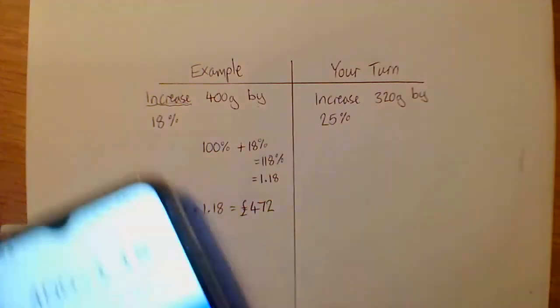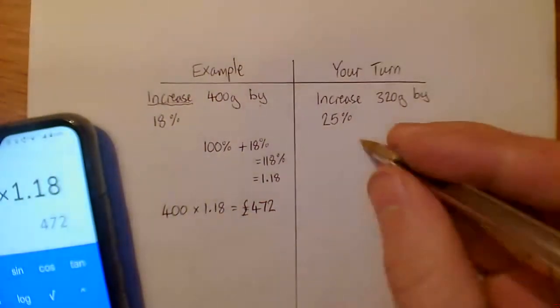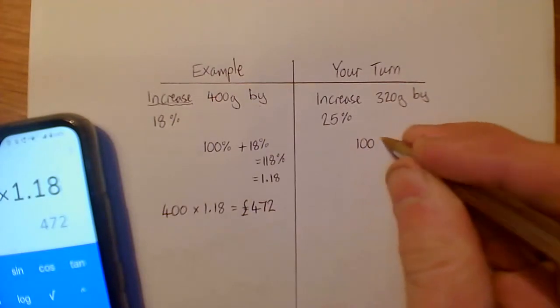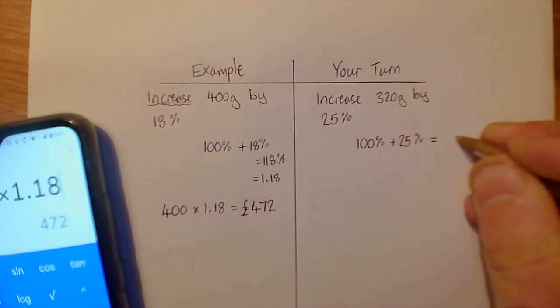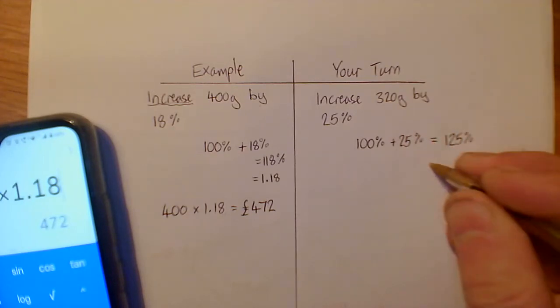Great, hopefully you paused that and had a go. So your first step should have been to do 100% plus 25%, and that gives you 125% or the decimal 1.25.